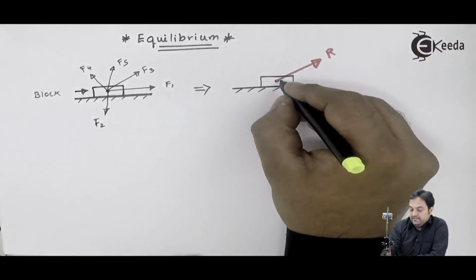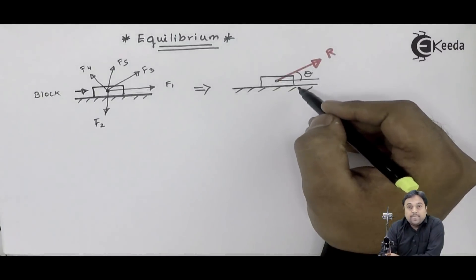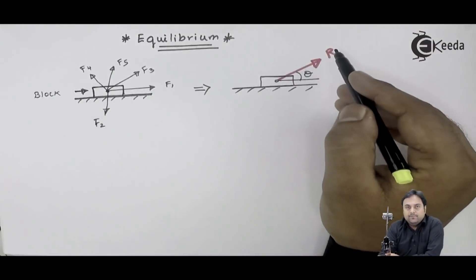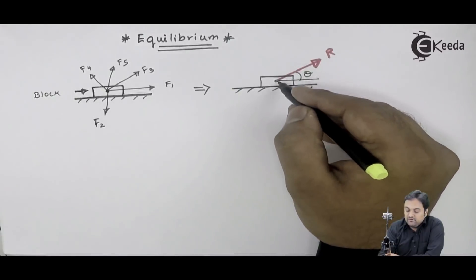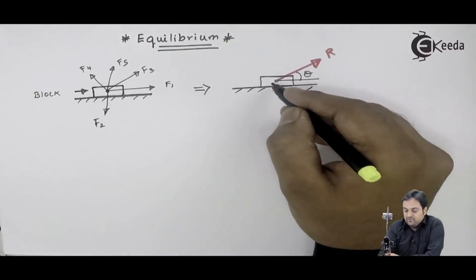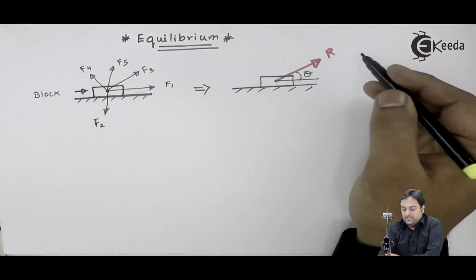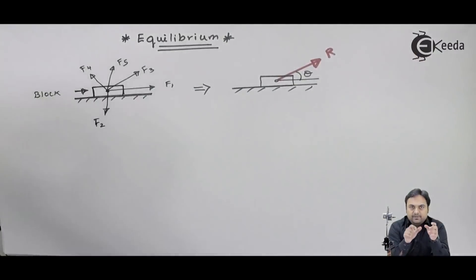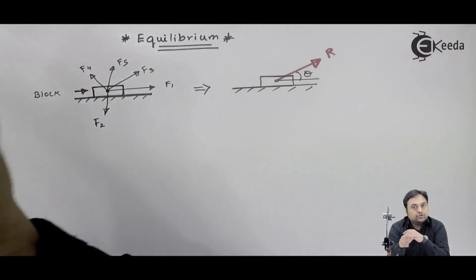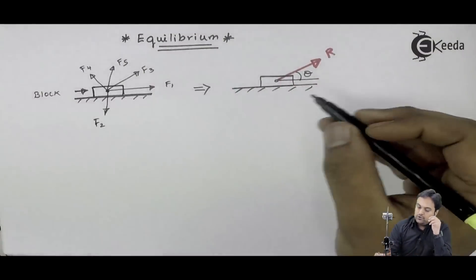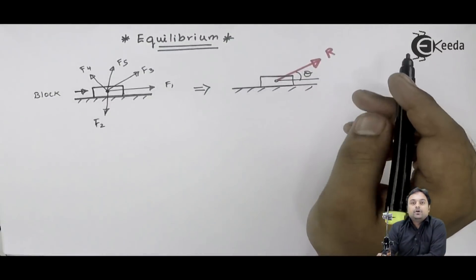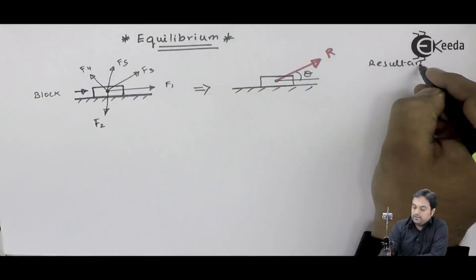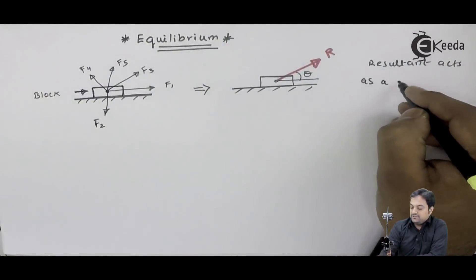The resultant will be inclined at an angle of theta. This is just an assumption that the resultant is acting upward. Now because of this resultant, since it is inclined at theta, we would be having two components — one horizontal, one vertical. Because of the components of resultant, this block will not be stable. It will move from its place — either in the horizontal direction or in the vertical direction. So the effect of resultant is to disturb the block. Resultant acts as a disturbing force.